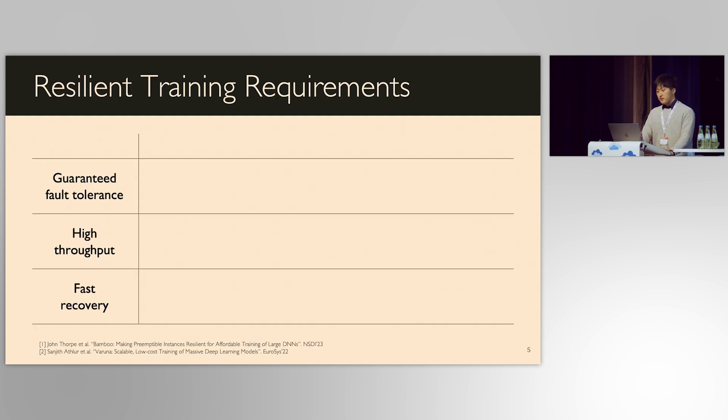To support fault tolerance, some works have been proposed recently. Bamboo provides redundancy by redundantly computing the same iteration twice, but in different GPUs. It successfully avoids full restart when a failure happens, but redundant computation slows down its throughput drastically. Worse, there's no fault tolerance guarantee, so whether it can recover from failure depends on the location of failures.